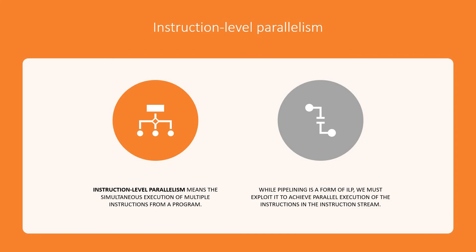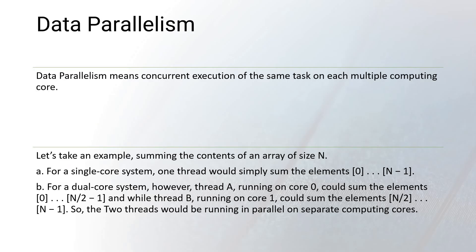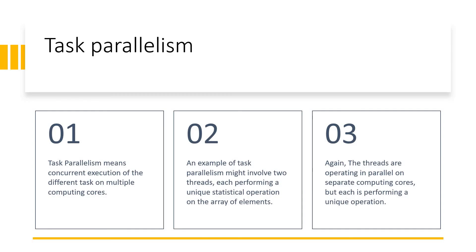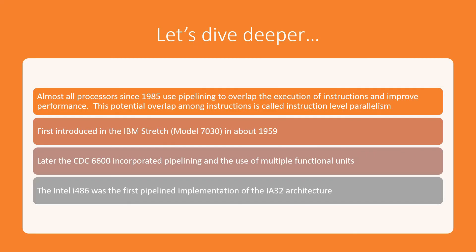To recap the four types of parallelism: data parallelism, bit level parallelism, task parallelism, and instruction level parallelism. All four have been covered with examples. Now we are going to dive deeper into instruction level parallelism.